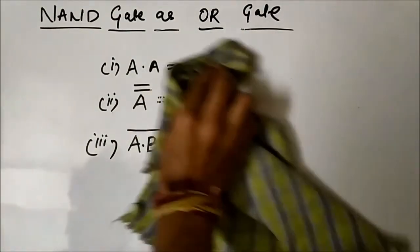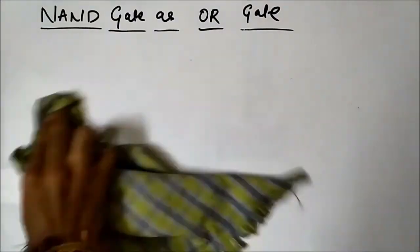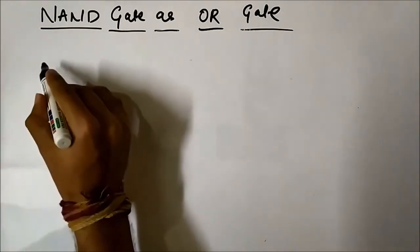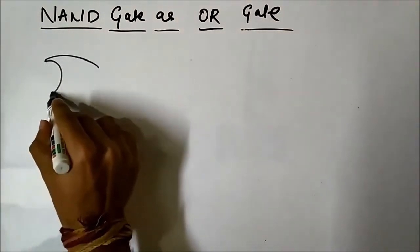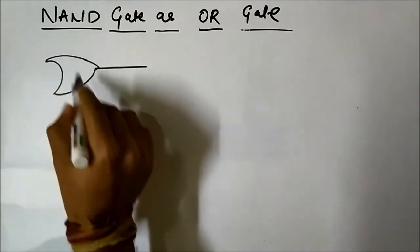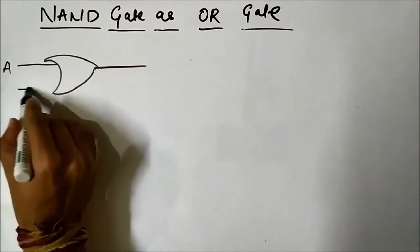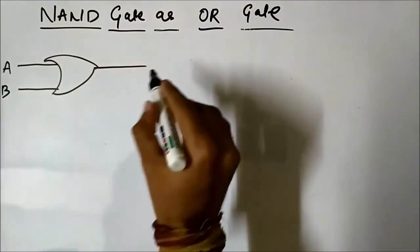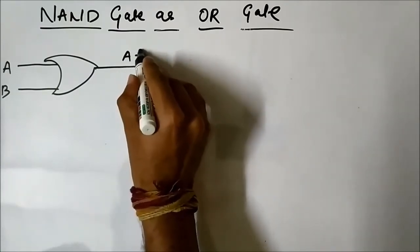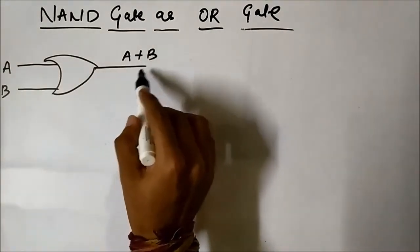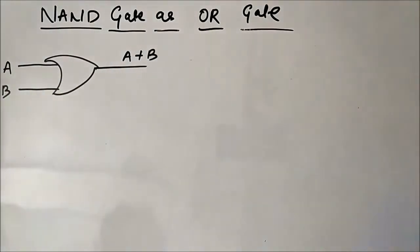Let us now perform the conversion. First, let us see what the output of an OR gate is. This is the schematic symbol of the OR gate. We have two inputs, A and B, and the output is A plus B.